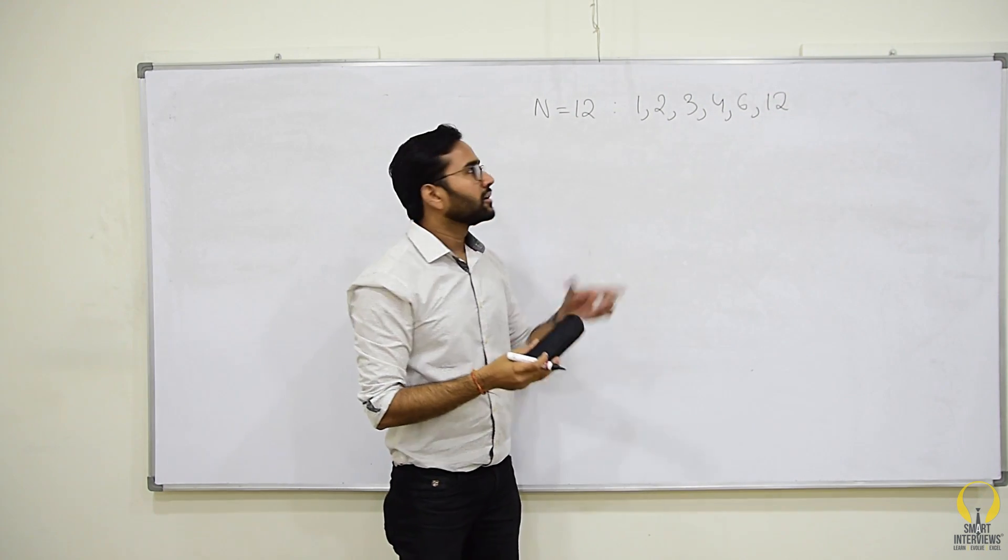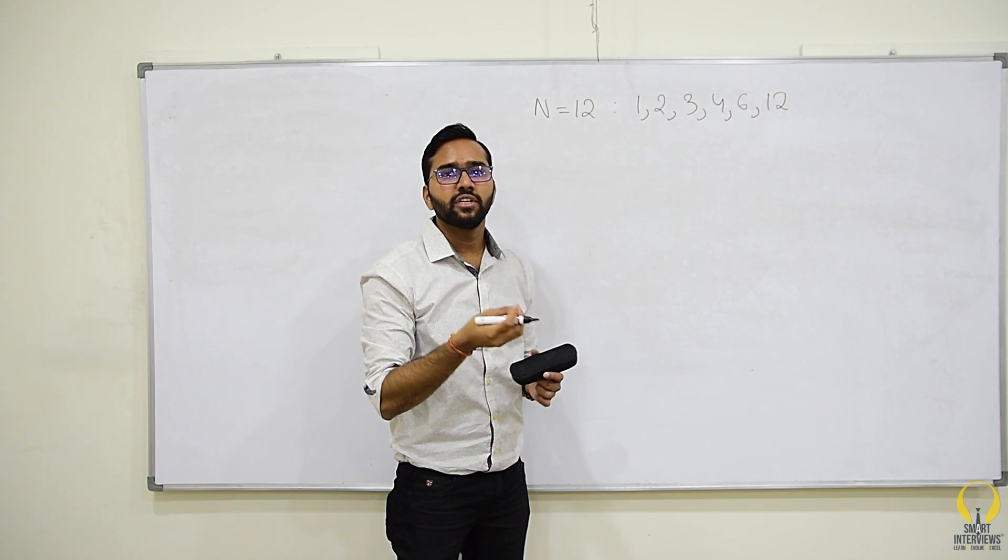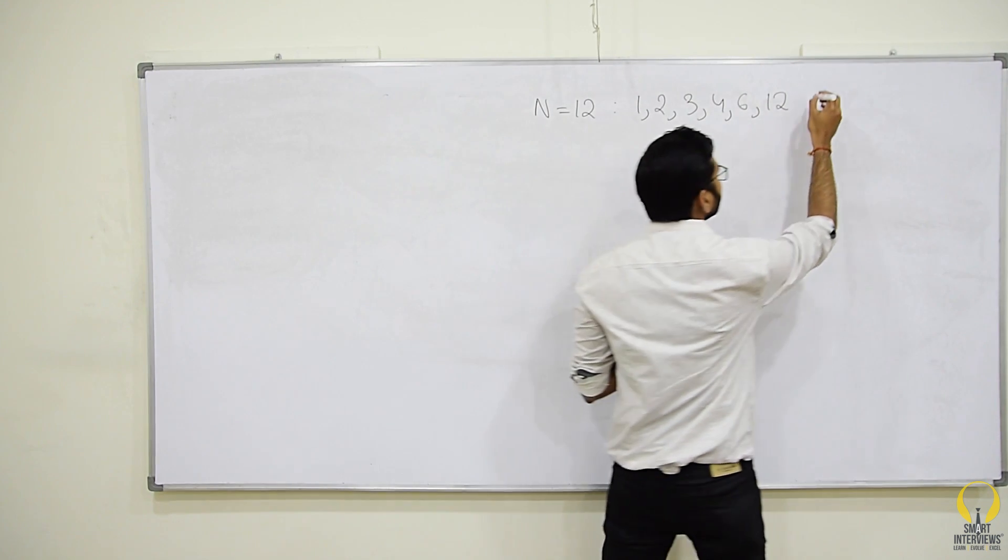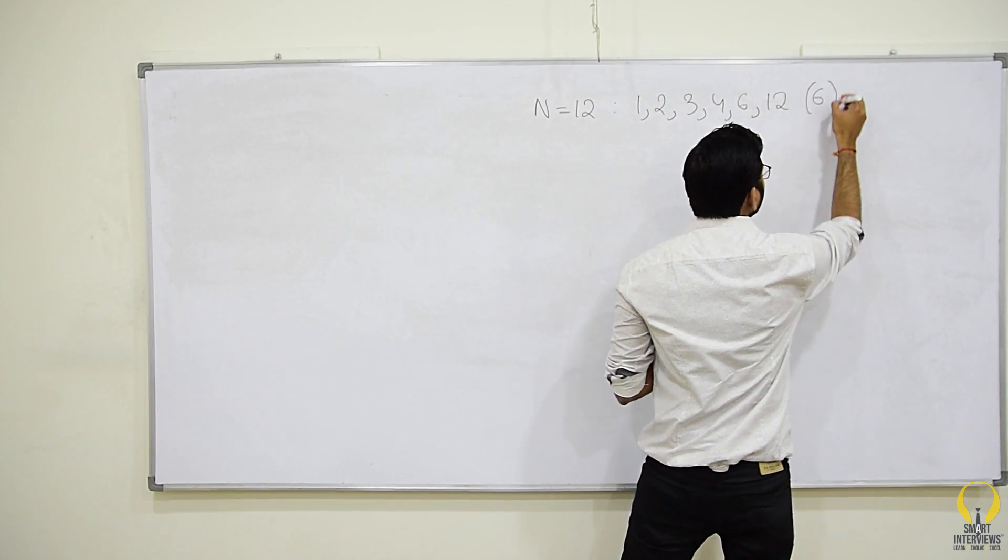You don't have to print the actual divisor, you can simply return the count of divisors. So, if n is 12, output should be 6.